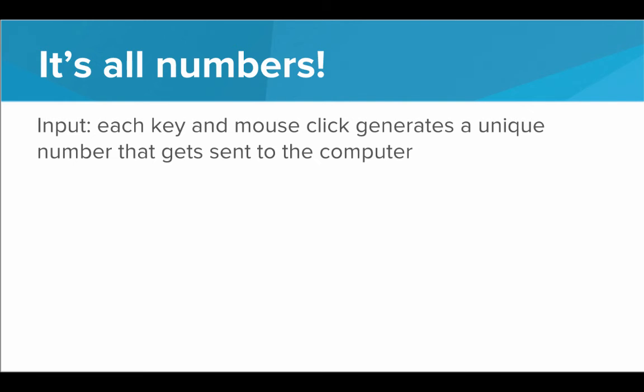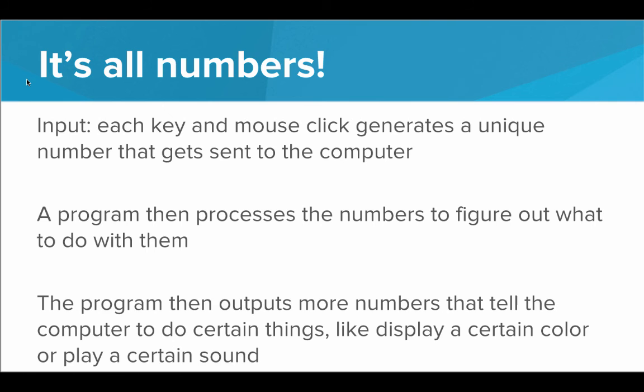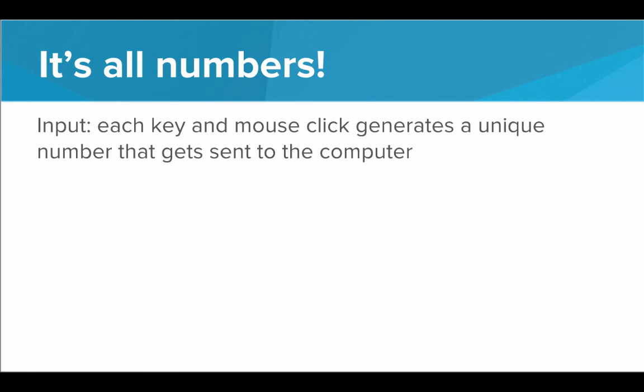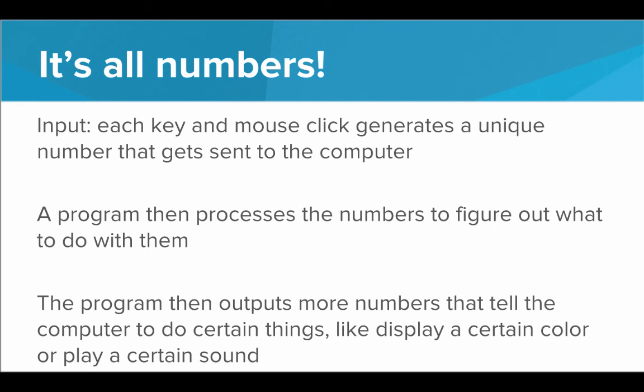So really a program has three parts: input, processing and output. So how is input really represented as a number? Well, every time I touch a key on the keyboard or click the mouse, this generates a unique number that gets sent to the computer. So if I were to click right here, that might send the number 34 to the computer. If I were to click right here, that might send the number 28 to the computer, things like that. So input is encoded as a number and that gets sent to the computer. Then a program processes the numbers, figures out what to do with them. And then once it knows it has output, it then generates output, which is just more numbers that tell the computer to do certain things like display a certain color or play a certain sound.